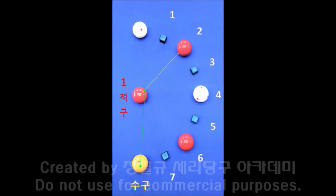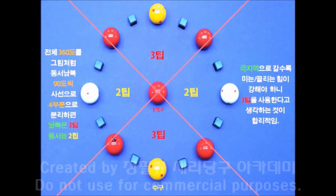수구로 1적구와 2적구를 직접 맞출 때, 두께와 당점을 정해야 하는데, 두께를 겨냥점으로 봤을 때 제1적구의 한 점인 겨냥점은 제2적구와 가장 가까운 지점입니다. 수구의 상하 당점은 제1적구를 기준으로, 제2적구가 북쪽에 있으면 상단을, 남쪽에 있으면 하단을 치면 되죠. 이제 남은 것은 팁수입니다. 원본 데이터를 분석하면 그림과 같은 결론이 나옵니다.